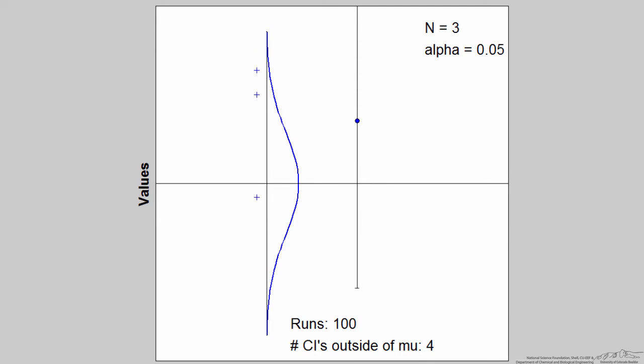And here, out of 100 runs, 100 different students, only four missed the confidence interval. Only four confidence intervals were outside of the true population mean.